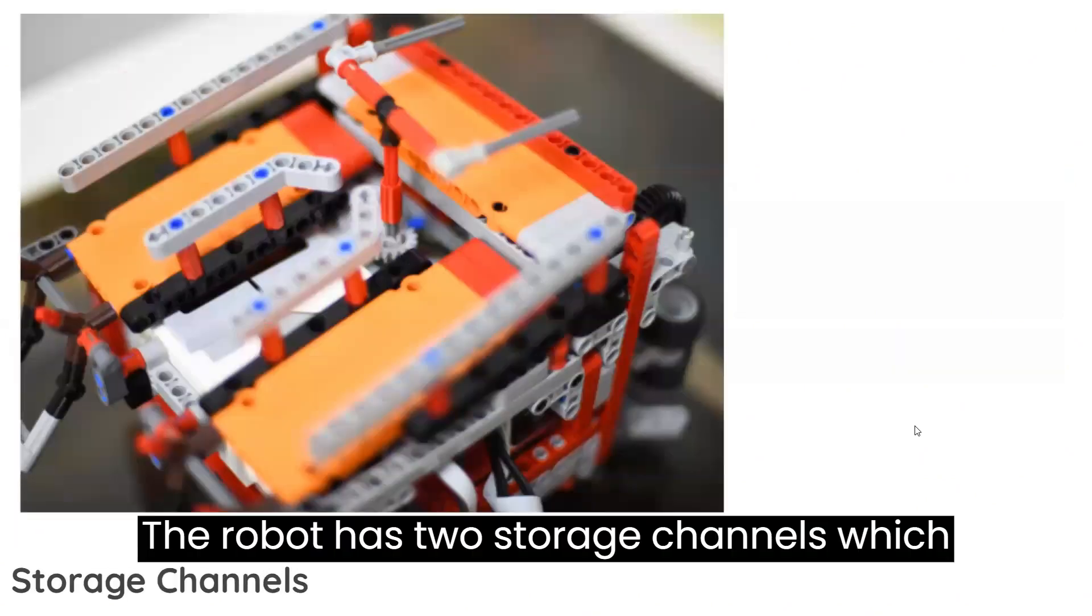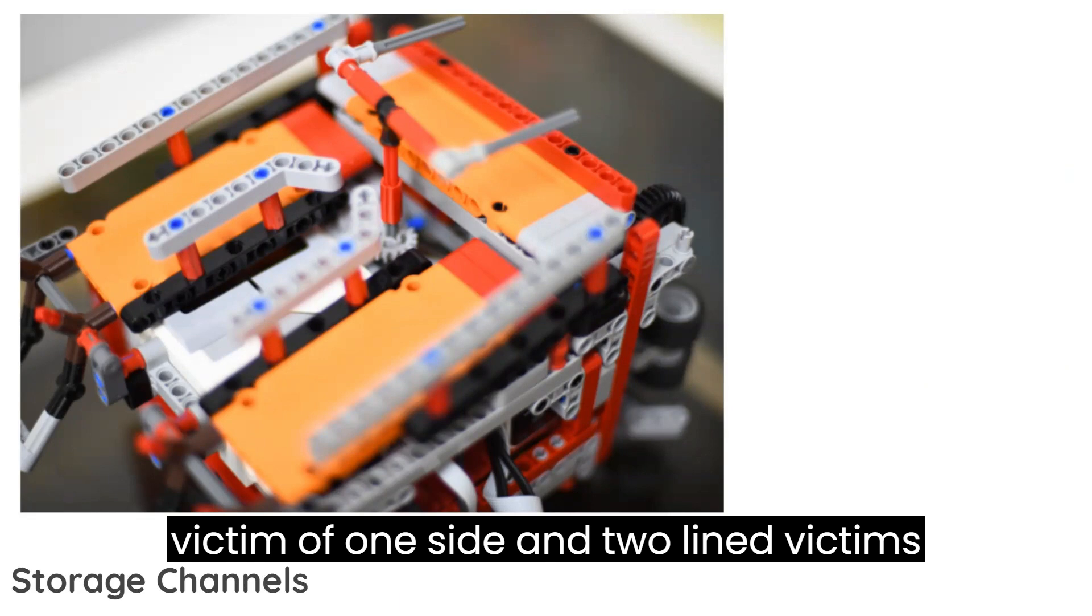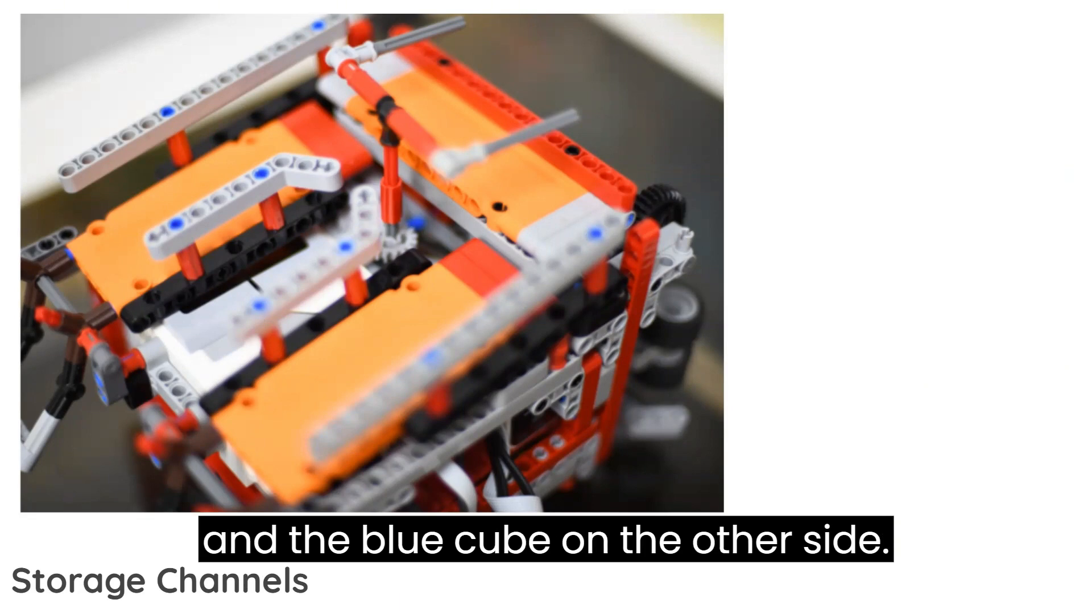The robot has two storage channels which are large enough to store the dead victim on one side and two live victims and the blue cube on the other side.